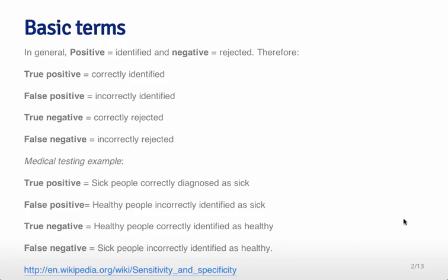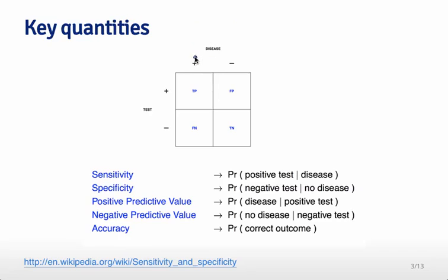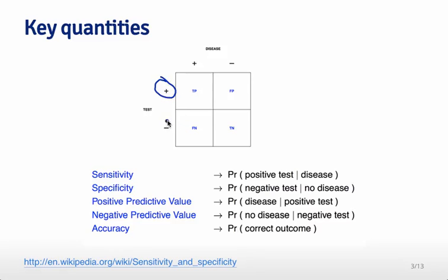You can learn more about sensitivity and specificity by going to the Wikipedia link. You can also see them in this two-by-two table — it has two rows and two columns. The columns correspond to your actual disease status: positive means you have the disease and negative means you don't. The test represents our prediction or machine learning algorithm: positive means we predict you have the disease, negative means we predict you don't.